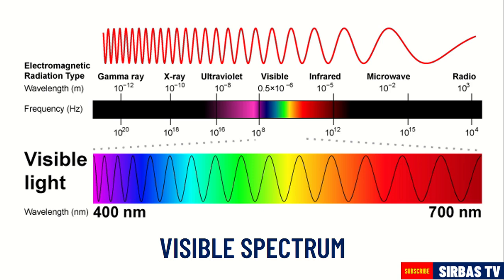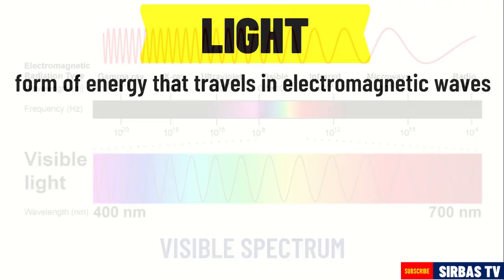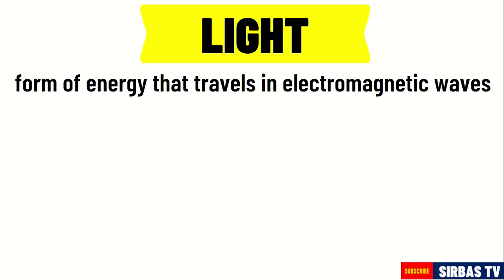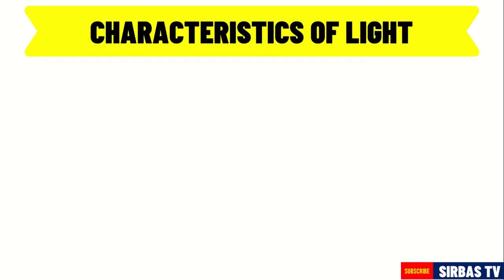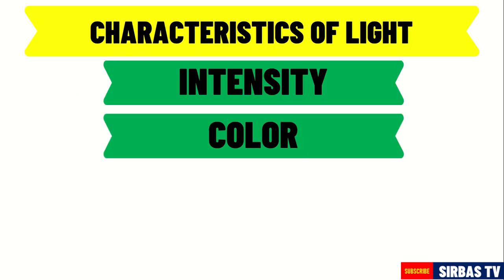Light is one form of energy that travels in electromagnetic waves. It behaves like a wave, and thus it also has a wavelength, frequency, and amplitude. These properties have something to do with the special characteristics of light, which include intensity and color.